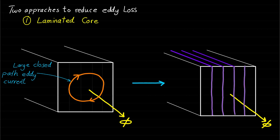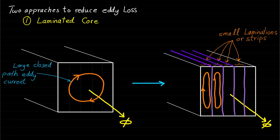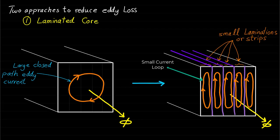then the maximum size of the current loop will be reduced, resulting in lower induced voltage and a lower current loop and therefore lower losses. The reduction of power loss is proportional to the width of these laminations. So smaller laminations are better. An insulation resin or varnish is used between the laminations so that the current path for the eddy current is limited to very small area.